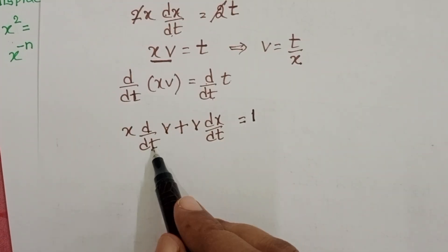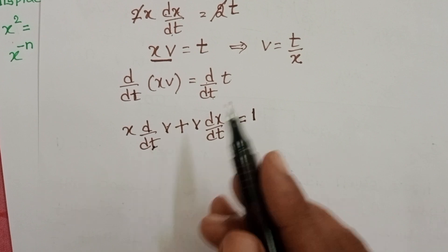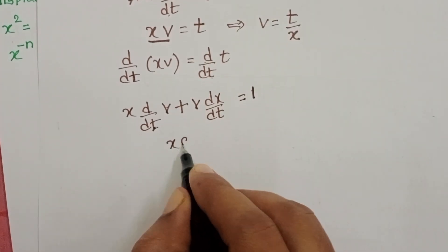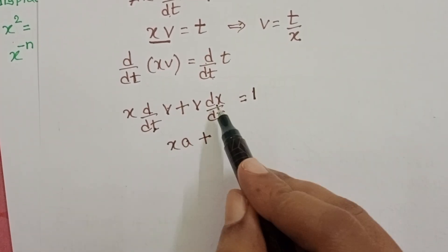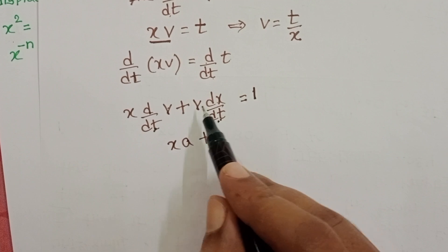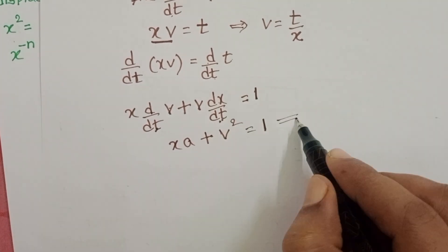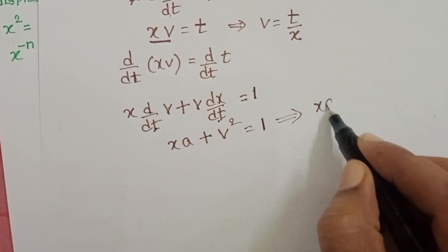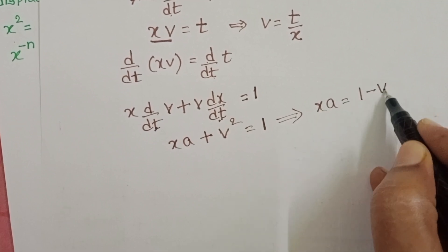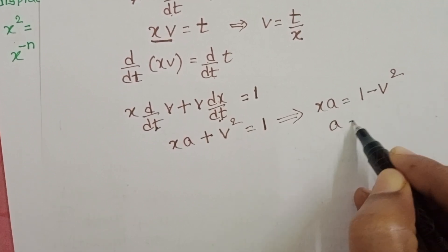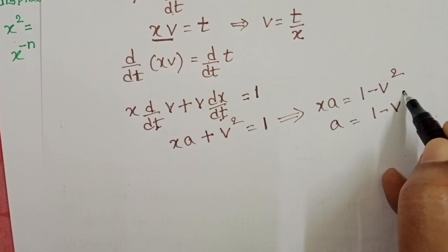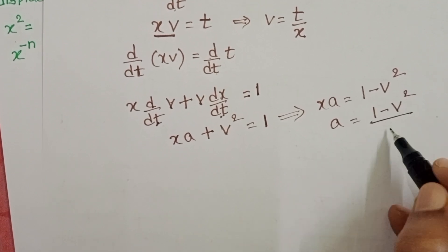dv/dt is rate of change of velocity, acceleration. xa plus dx/dt is velocity. v times v becomes v². From this, xa = 1 - v². And a = (1 - v²)/x.